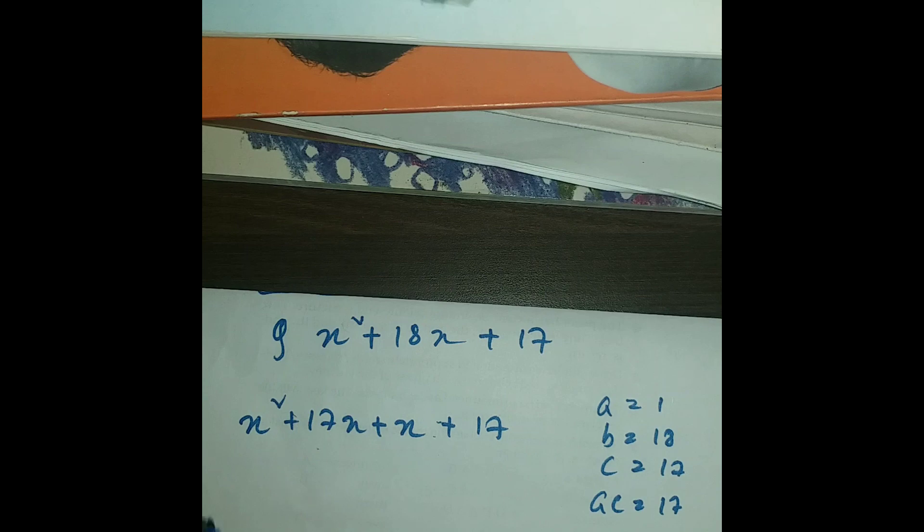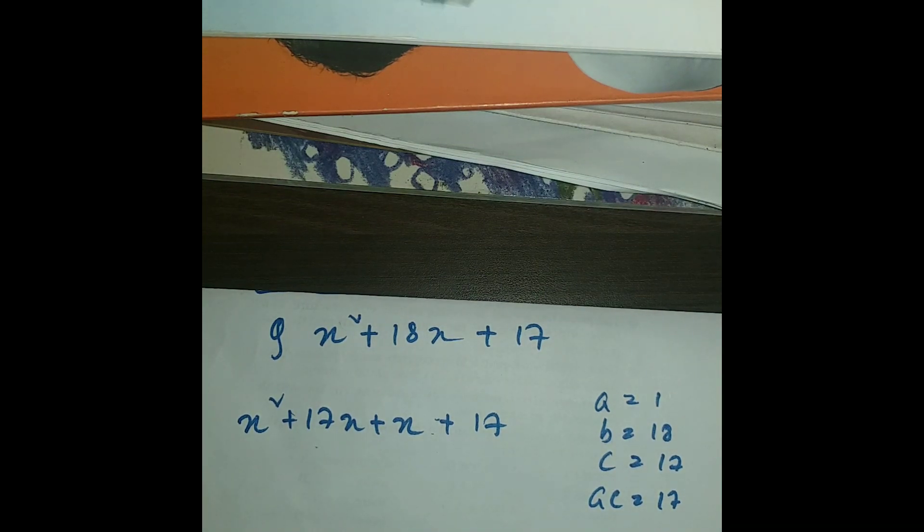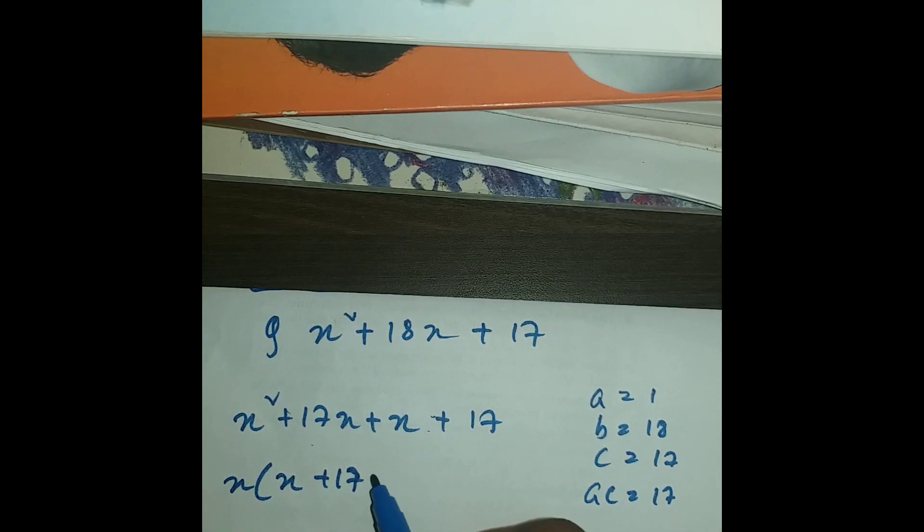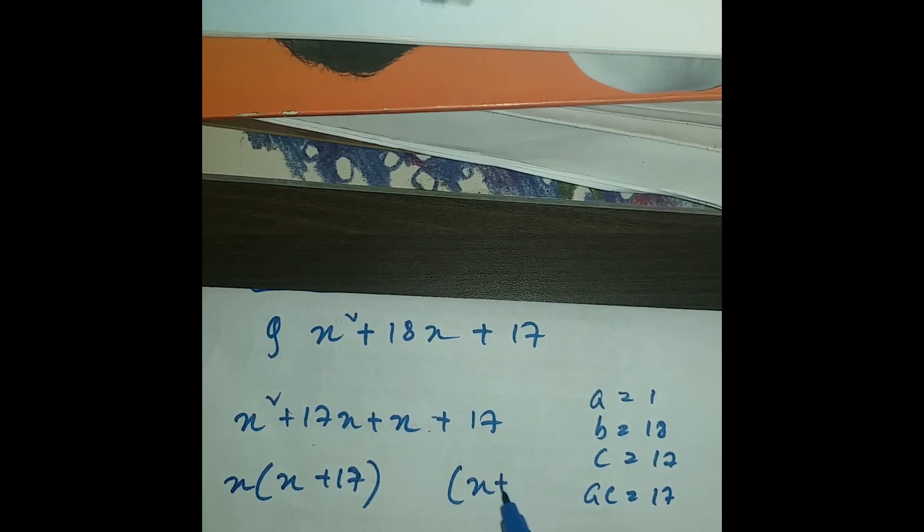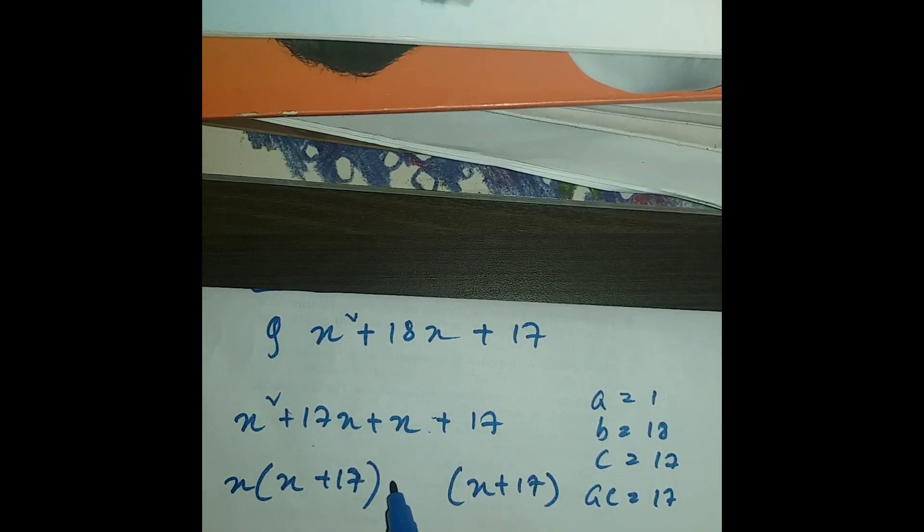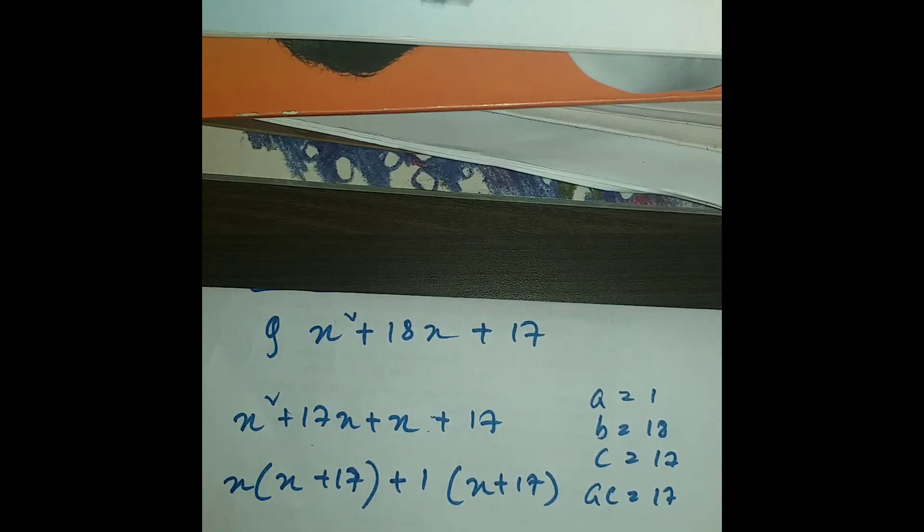After that, we're gonna take common from here. So we can see that x times (x + 17). By writing it again, x + 17, we're gonna write here x, or we can write 1 also. 1 would be good.